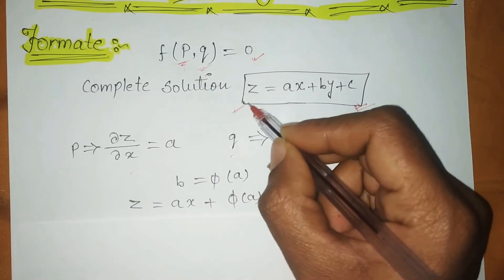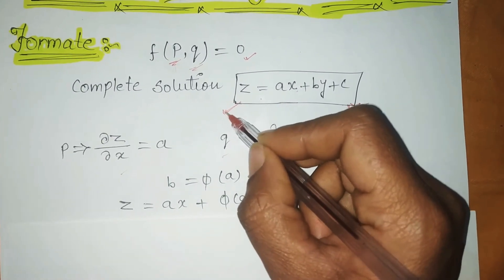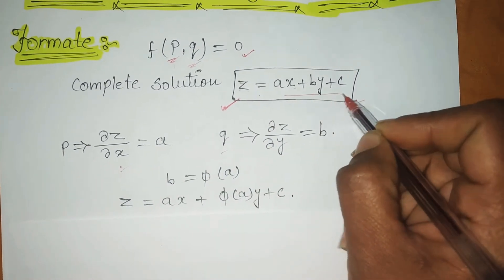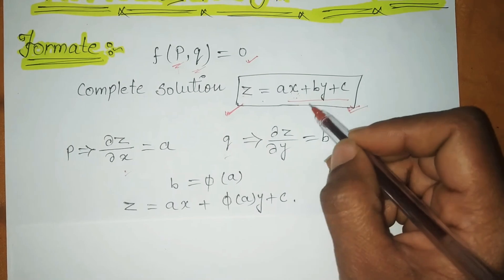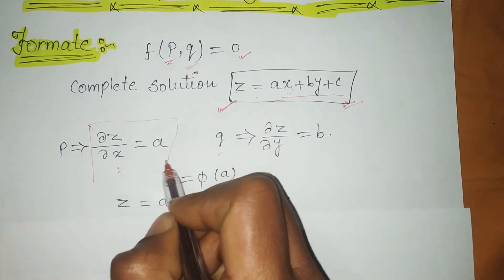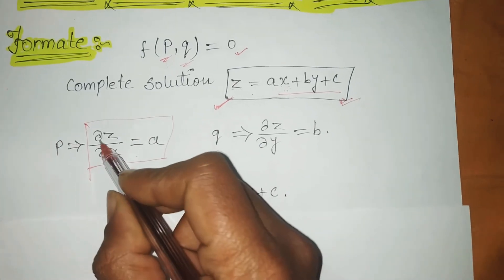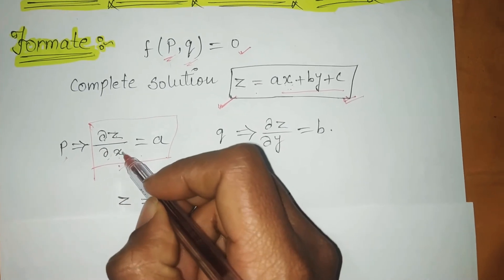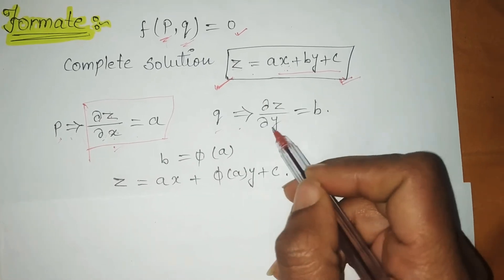If we differentiate this equation with respect to x, we get del z upon del x, which equals P (from the RHS, only the ax term differentiates; the rest become zero). Similarly, differentiating with respect to y gives del z upon del y, which equals Q, and only the y term differentiates while the rest give 0.